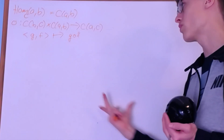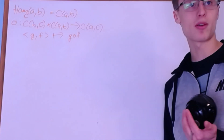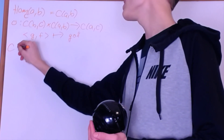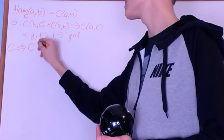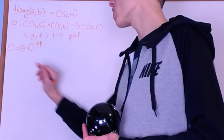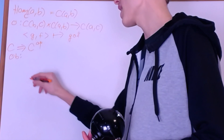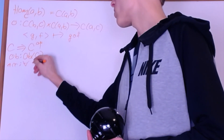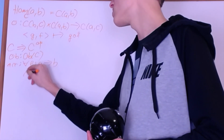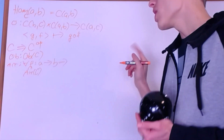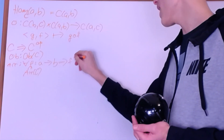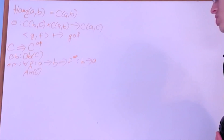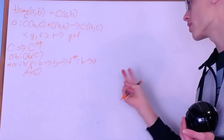On locally small categories you can just view composition as a function which takes in two arrows. The first construction I'm going to do on arrows is called the opposite category. Given a category C we can construct the opposite category C^op, which preserves the objects. However, if I have an arrow F from A to B in C, I construct a new arrow F^op in C^op which goes from B to A. So the arrows of an opposite category are just the arrows of C but with the domain and codomain flipped.